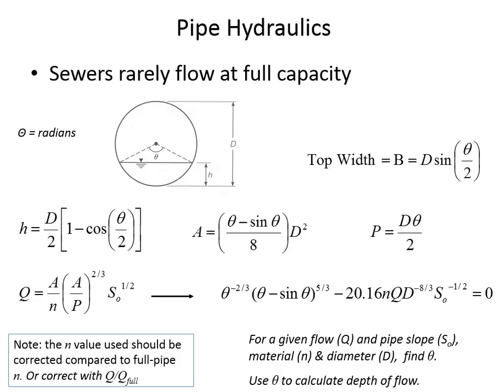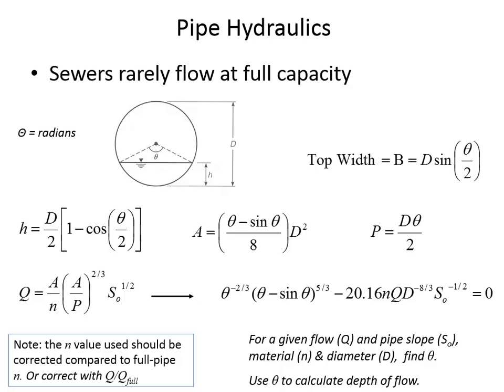The design procedure: given a required flow rate from demand estimation, the known pipe slope from site topography, and the n value from the pipe manufacturer, you solve for the pipe diameter needed and then find the flow angle θ. The angle tells you the depth of flow, and it's somewhat an iterative process — you solve for diameter and then back-solve for depth and angle.